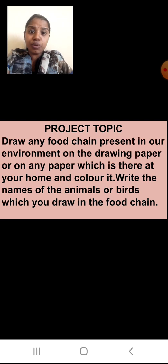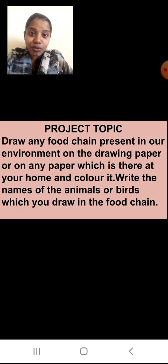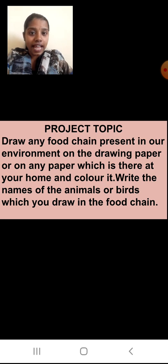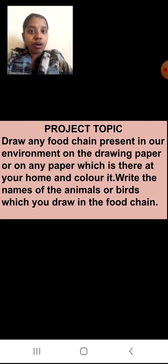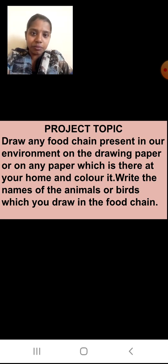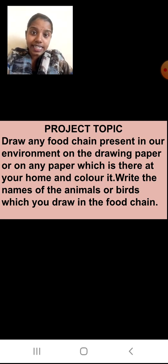Nicely, using different colors, you are going to color it. You can draw a very big food chain or a very small food chain — whichever is easier for you. Try to learn that food chain: who is eating whom, how many herbivorous animals, and which is the carnivorous animal. Write the names of the animals or birds which you draw in the food chain, near that animal, so that you will understand which animal is eating which.